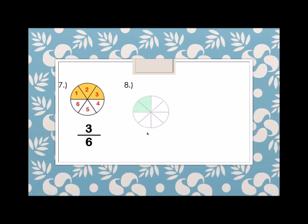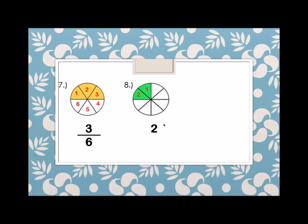Next, we have a circle again. How many shaded parts? 1, 2. Therefore, the numerator is 2 — the number on top is 2. Over how many total parts? 1, 2, 3, 4, 5, 6, 7, and 8. Therefore, the denominator is 8.